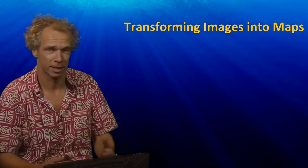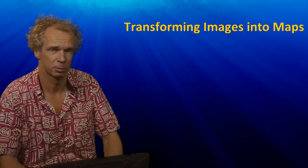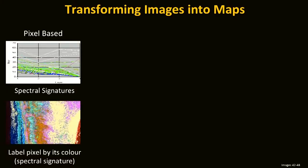Stuart was just talking about the characteristics of different satellite imagery. These characteristics will be used to create maps. For creating maps there are different approaches. The first one is the pixel-based approach, where every pixel is characterized by specific spectral signatures as Stuart introduced earlier. If we know some of these spectral signatures, we can compare other pixels to see if they have the same spectral signatures. When we find them having the same characteristics, we're able to label them with the same category or color.